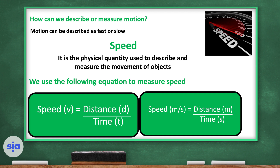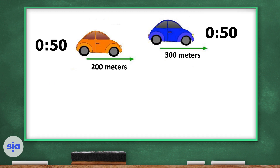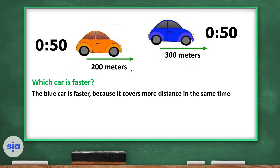Speed is measured in meters per second, distance in meters and time in seconds. So speed equals distance divided by time. For example, the blue car moves 300 meters in 50 seconds while the yellow car moves 200 meters in 50 seconds. Which car is faster? The blue car is faster because it covers more distance in the same time.